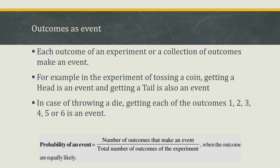Each outcome of an experiment, or a collection of outcomes, makes an event. For example, in tossing a coin, getting a head is an event and getting a tail is also an event. In throwing a dice, getting each of the outcomes 1, 2, 3, 4, 5, or 6 is an event. Probability of an event equals number of favorable outcomes upon total number of outcomes.